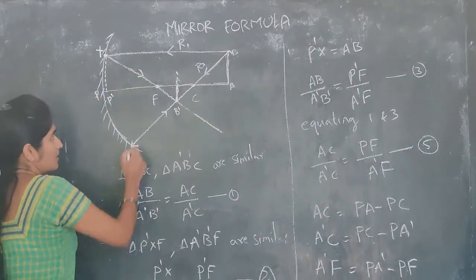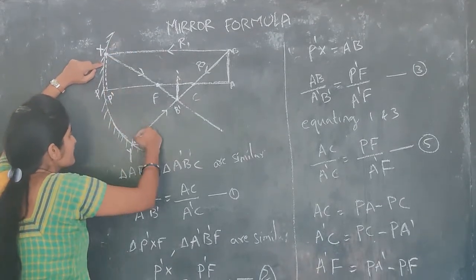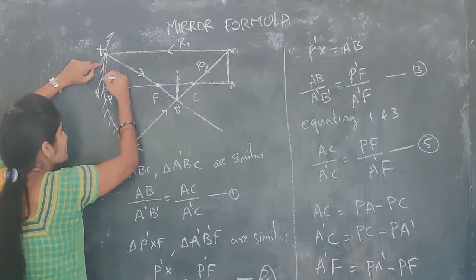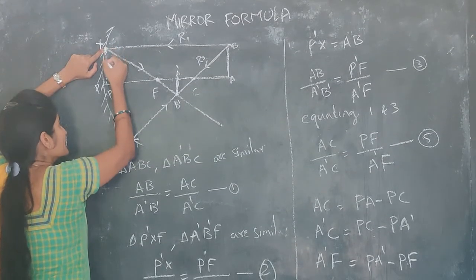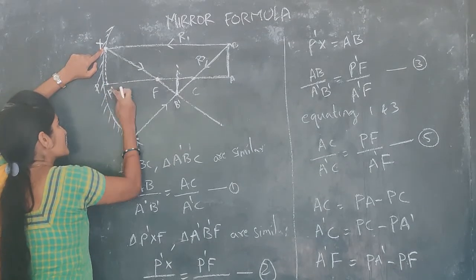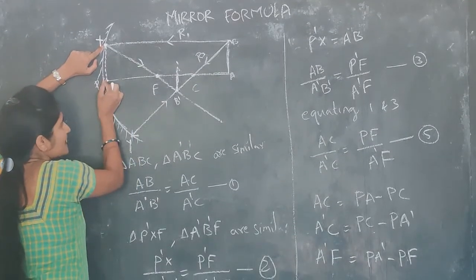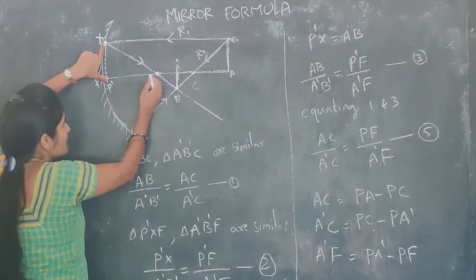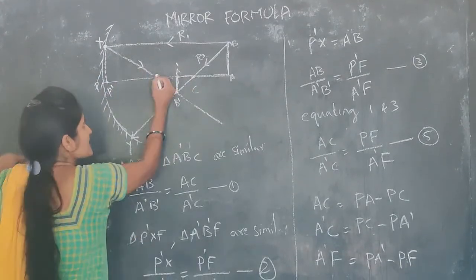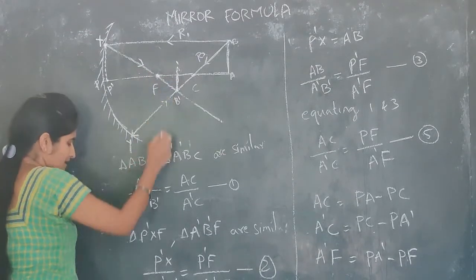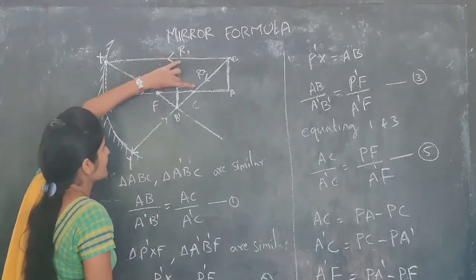Next, I am comparing triangles at F. Because it is a curved surface, there can be slight differences. To handle this, I am drawing a perpendicular line from X which touches the principal axis at P dash — P dash will approximately coincide with P. Triangles X P dash F and F A dash B dash are both similar triangles at point F. By comparing these two triangles, I can write: P dash X / A dash B dash = P dash F / A dash F.